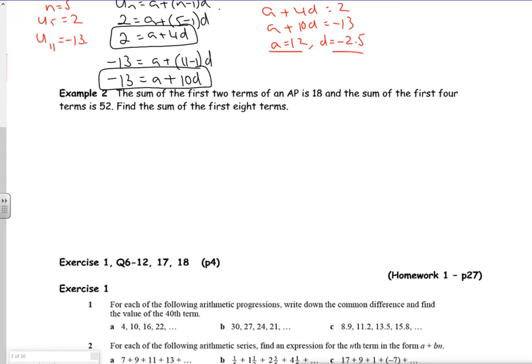This is a quick video, it's just the final example on the first lesson of the A2 series. We're talking about the sum of the first two terms, so I know that the sum of the first two terms is 18, so n is 2. That gives me the information to fill in some bits.